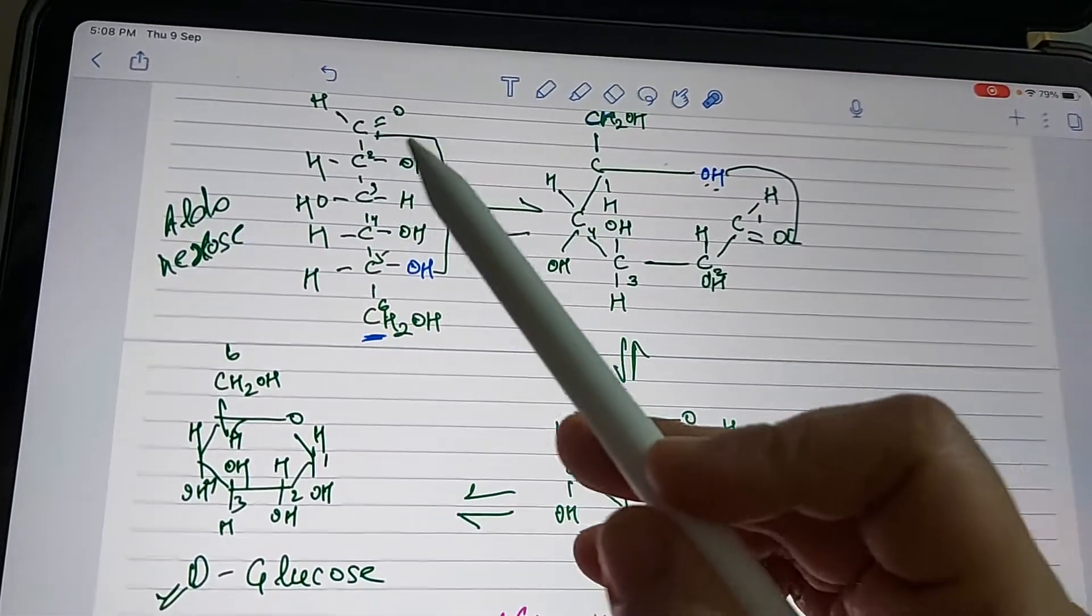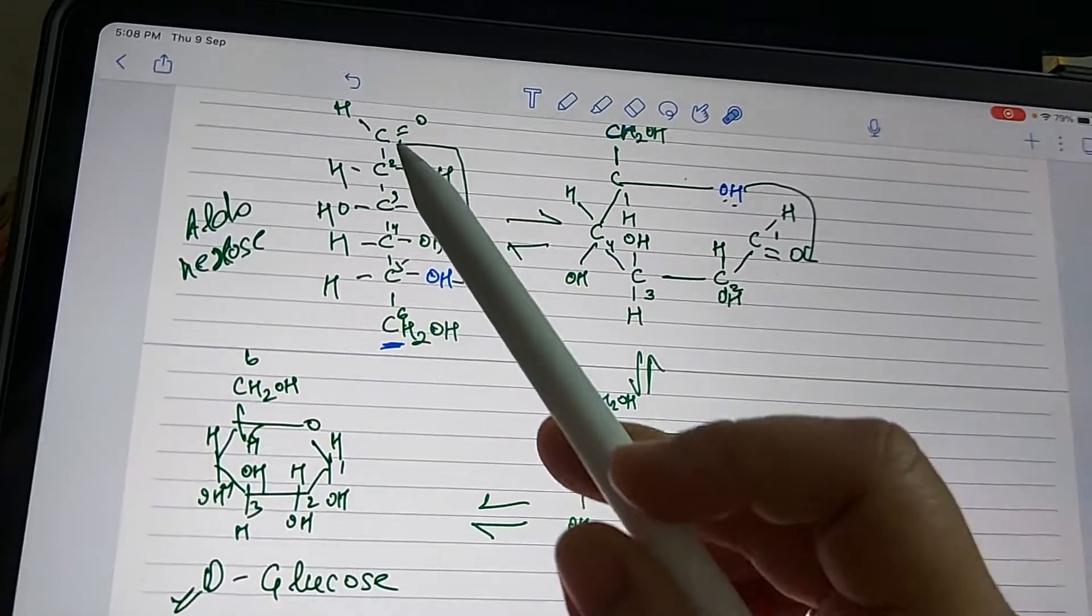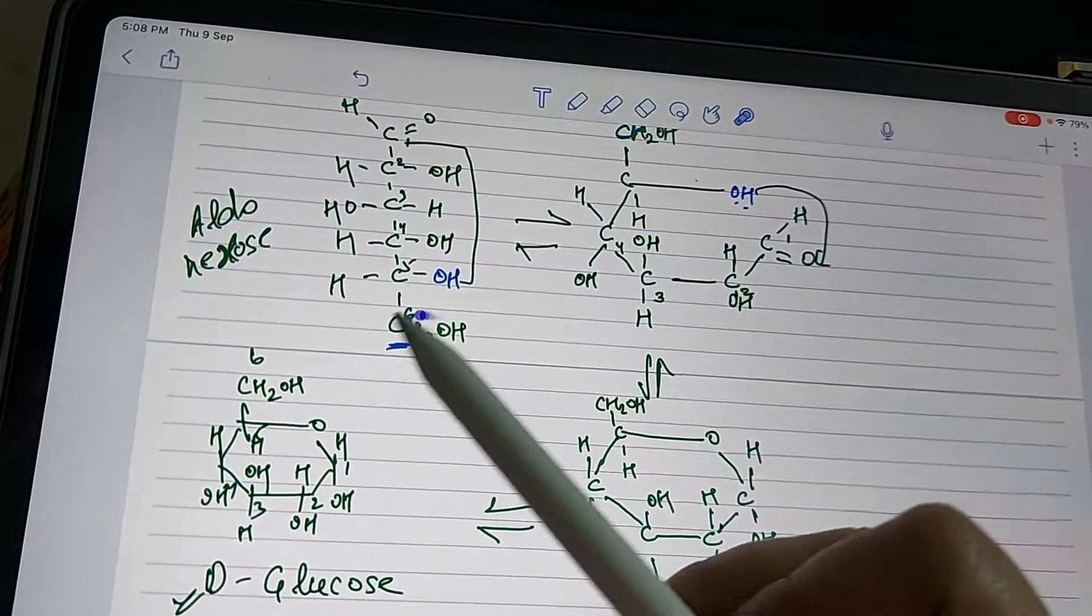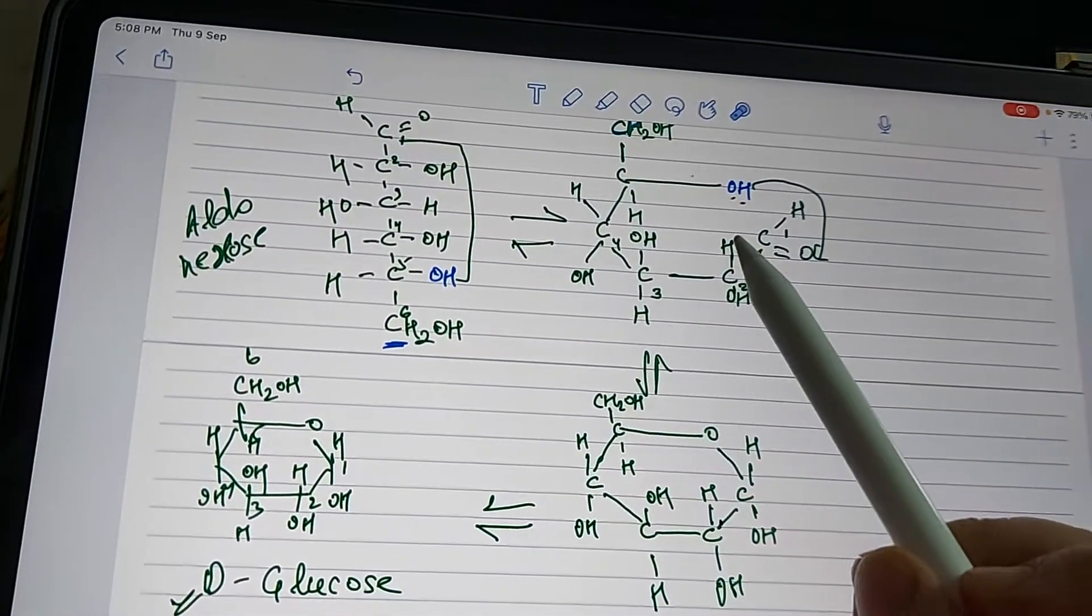See, this is an aldohexose: 1, 2, 3, 4, 5, 6 carbons. Since it's an aldose, it has a CHO group, and the last carbon is a CH2OH group.